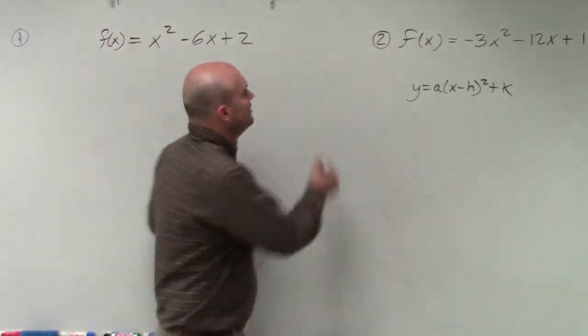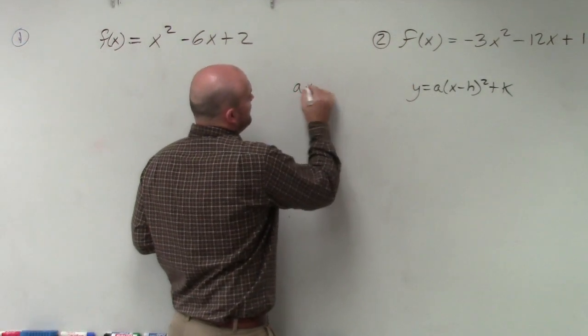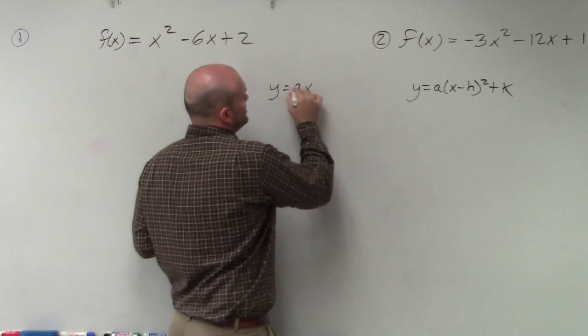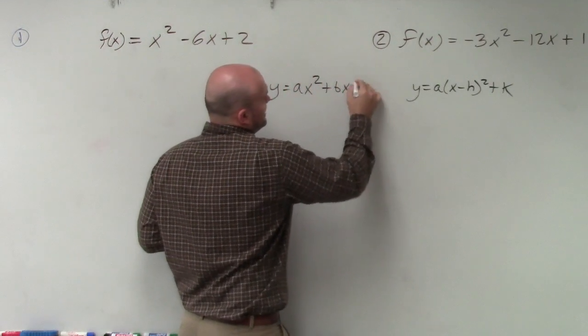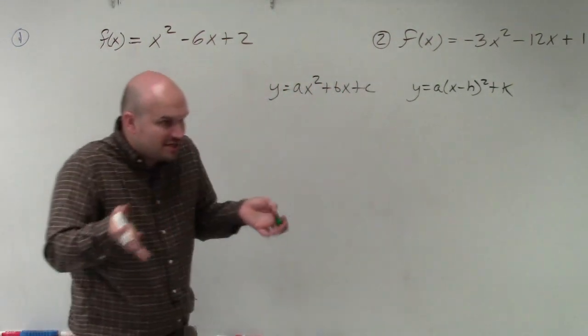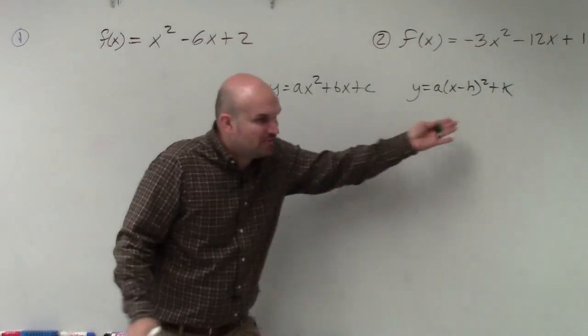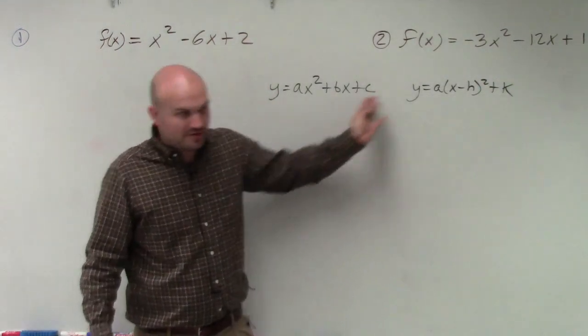Easy. h, k. Done. But the problem is, we have a function or an equation in ax squared plus bx plus c. Now, what I want you guys to understand is these both provide parabolas. They're both going to be the same graph.